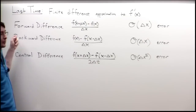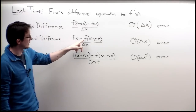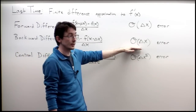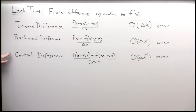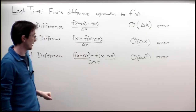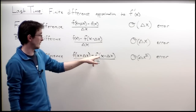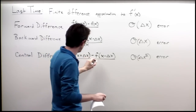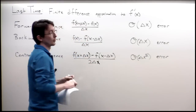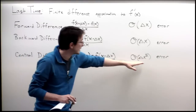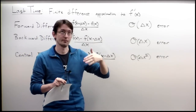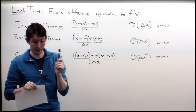Similarly, we have a backward difference: f of x minus f at x minus delta x, divided by delta x. This also has order delta x error. And finally, we arrived at the central difference derivative, where we take f of x plus delta x minus f of x minus delta x, divided by 2 delta x. This has order delta x squared error, which is very nice — if I make dx smaller, my error gets that much smaller squared.